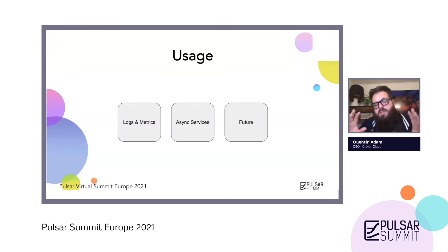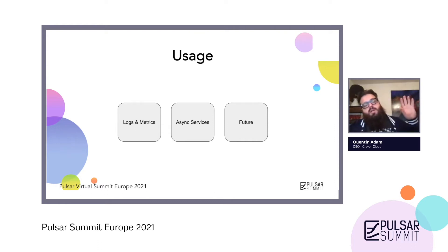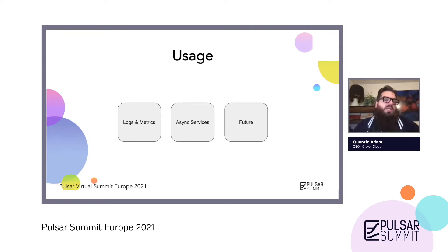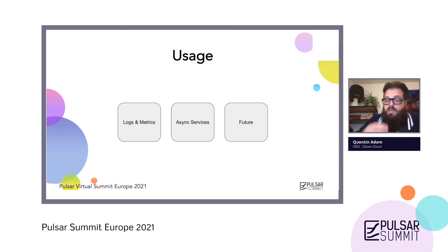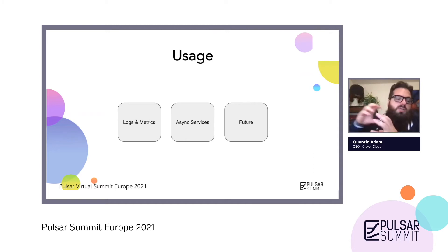If you look at what we decided to address, the first point is logs and metrics. When I say logs, I speak about applicative logs but also access logs. When I speak about metrics, it's CPU load, applicative metrics, all this kind of complicated metric. Then there's the asynchronous system — all the usage of service A speaking to service B — which is business services. And in the future, we have points which use the event log inside the system as a backbone for the whole system infrastructure.